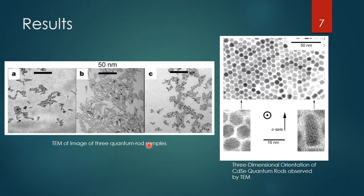Now let's examine some of the results from the experimental method just outlined. They used TEM — Transmission Electron Microscopy — images to show the quantum rods they were able to synthesize. Basically, you shine a beam of electrons through a very thin sample, and the image shows how that beam interacts with your synthesized particles.